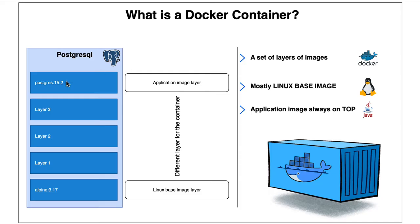A Docker container is a set of layers of images as shown in the diagram. Mostly it's a Linux base image, and most of the time it's Alpine because Alpine is a lightweight version of Linux. We have a set of image layers, and always the application image sits on top. So we have the Linux base image layer, different intermediate layers, and finally the application image layer. When you pull an image it starts pulling the different layers, finally pulling the application layer.